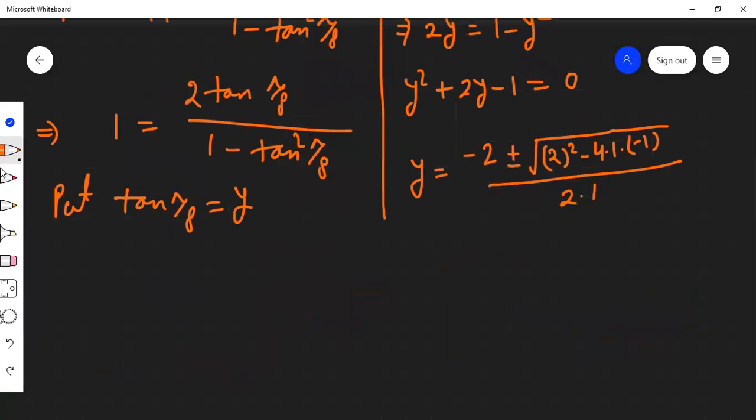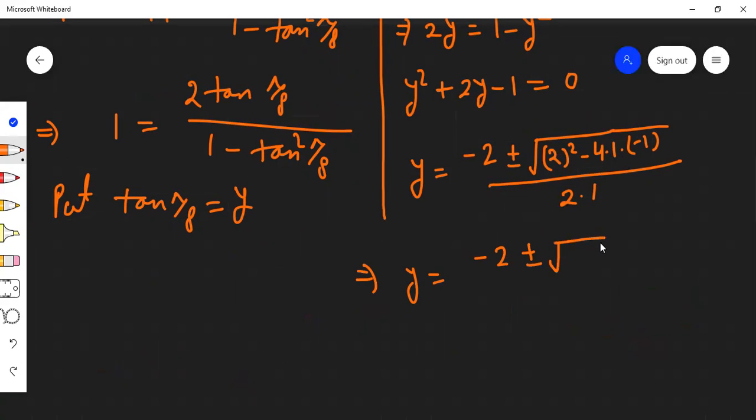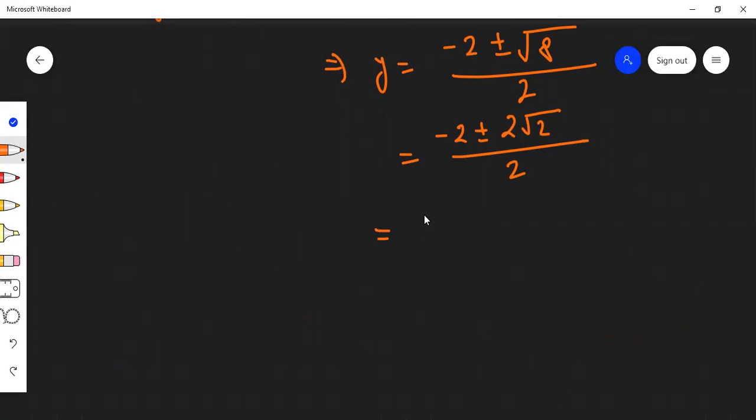Simplifying, y equals (-2 ± √8)/2. Since √8 equals 2√2, this becomes (-2 ± 2√2)/2. Factoring out 2 from the numerator, y = -1 ± √2.